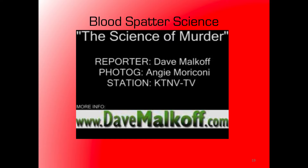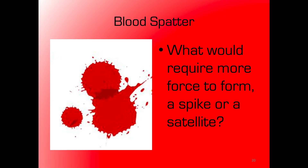A lot of neat stuff there — using luminol to figure out cleaned-up scenes, whether somebody walked or ran, the direction things were traveling, and the angles they came from. Cycling back to the earlier question: what requires more force — forming a spike or a satellite? A satellite requires more force because it actually broke free from the droplet; the spikes show cohesion fighting and winning, keeping blood intact with the main droplet.